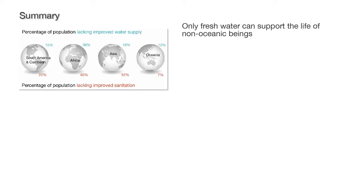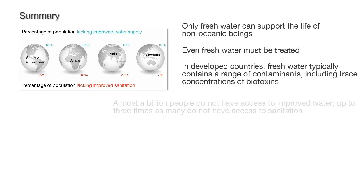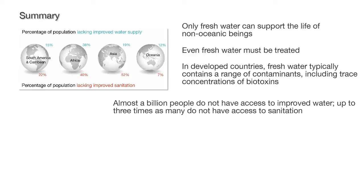Although the earth's surface is more than 75% water, only freshwater can support the life of non-oceanic beings. Even freshwater must be treated. In developed countries, freshwater typically contains a range of contaminants including trace concentrations of biotoxins. Almost a billion people do not have access to improved water, and up to three times as many do not have access to sanitation.